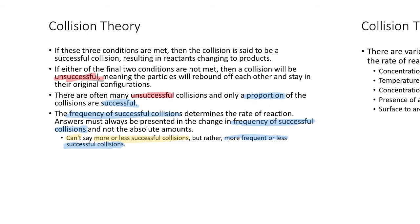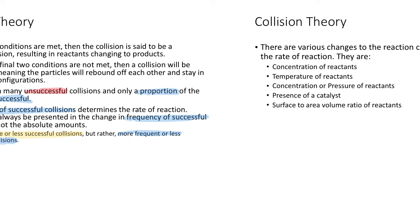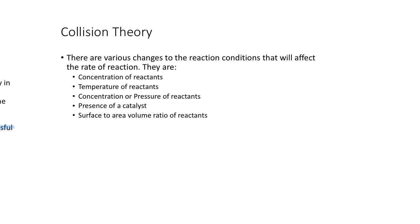Finally, there are different ways to change the rates of reaction: concentration, temperature, pressure — and concentration and pressure are really linked together — presence of a catalyst, and surface area to volume ratio. Those are the four main ways to change the rate of reaction. You can also talk about agitation if you felt like it, but those four are the main ones.